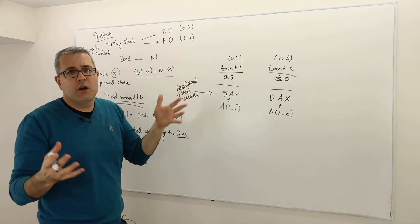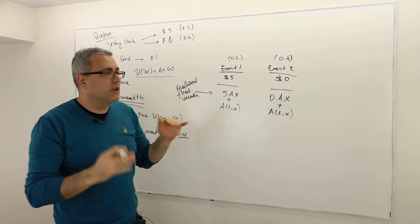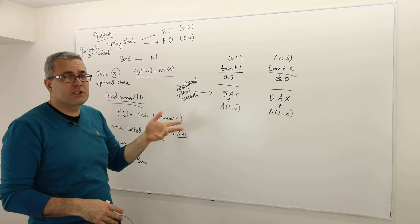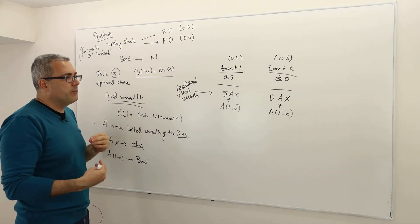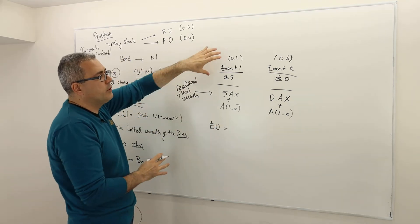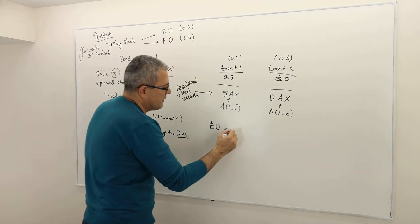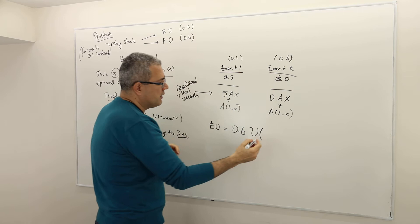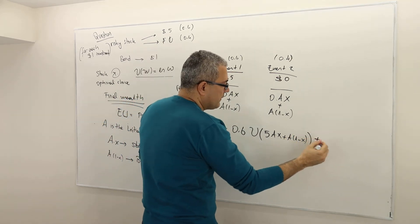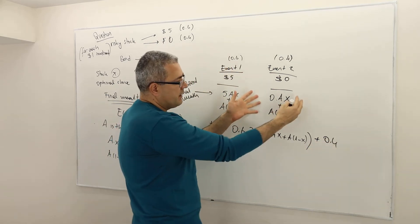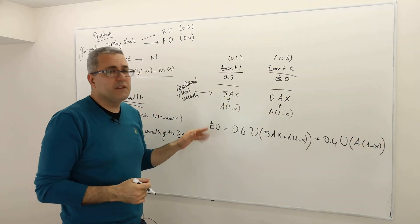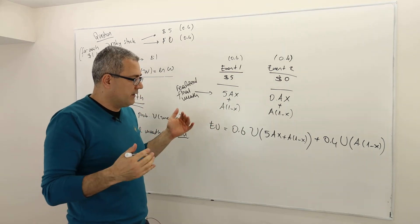Well, because regardless of the event, some part of your money was invested on bond. Therefore, your realized final wealth under event one is going to be 5AX plus A(1-X). In this case, under event two, your final wealth is going to be zero plus A times 1 minus X. So this is the realized final wealth under event one, meaning if everything goes nice you make profit. This is your final wealth if things do not go well, meaning you lose all your investment in stock market. Now when I want to calculate expected payoff, the probability of this event, the expected utility is the following: the probability of event one, which is 0.6, times utility of this final wealth, which is 5AX plus A(1-X), plus with probability 0.4, I have this final wealth, so it's U of A(1-X).